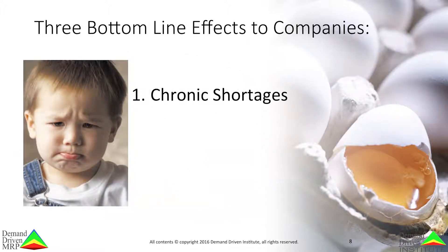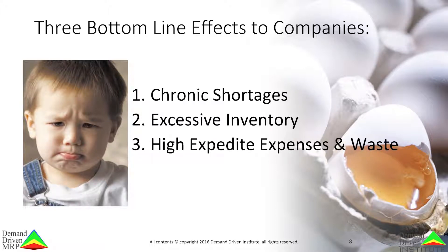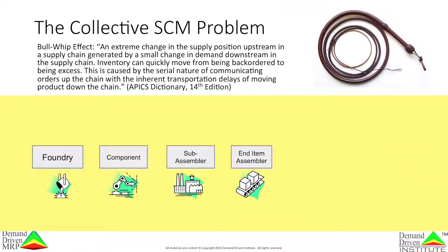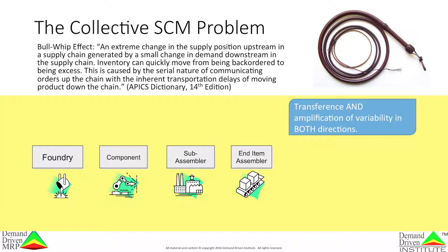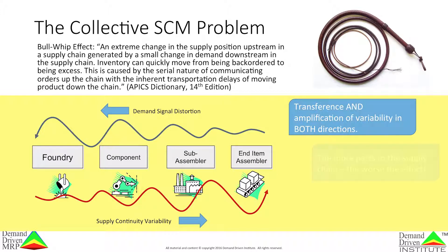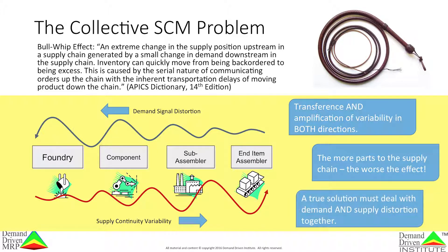90% of companies using MRP report this issue. This bimodal distribution is devastating to the bottom line — it means chronic and frequent shortages while also having excessive inventory and incurring high expenses due to expedite and waste. Yet this is only at the single company level. The collective problem is one that wreaks havoc on modern supply chains: the bullwhip effect. The bullwhip effect is the transference and amplification of variability up and down the chain. It is bidirectional — the more parts to the chain, the worse the effect. Any lasting solution to the bullwhip must address its bidirectional nature.